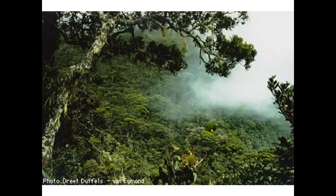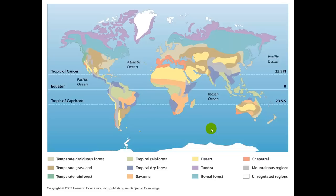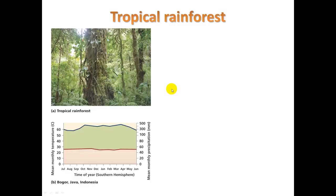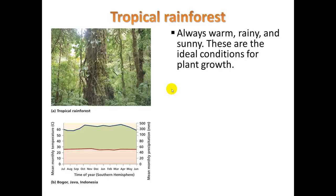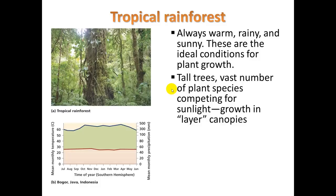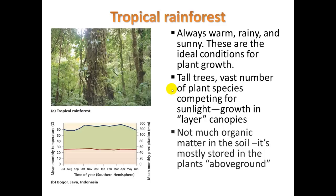Let's move to tropical rainforests. This is what we think of when we talk about the Amazon — areas along the equator in the South Pacific and Africa. It's always warm, rainy, and sunny, making these ideal conditions for plant growth. You have tall trees and a vast number of plant species competing mostly for sunlight, because there's plenty of water. There's not much organic matter in the soil — it's mostly stored in the plants above ground.